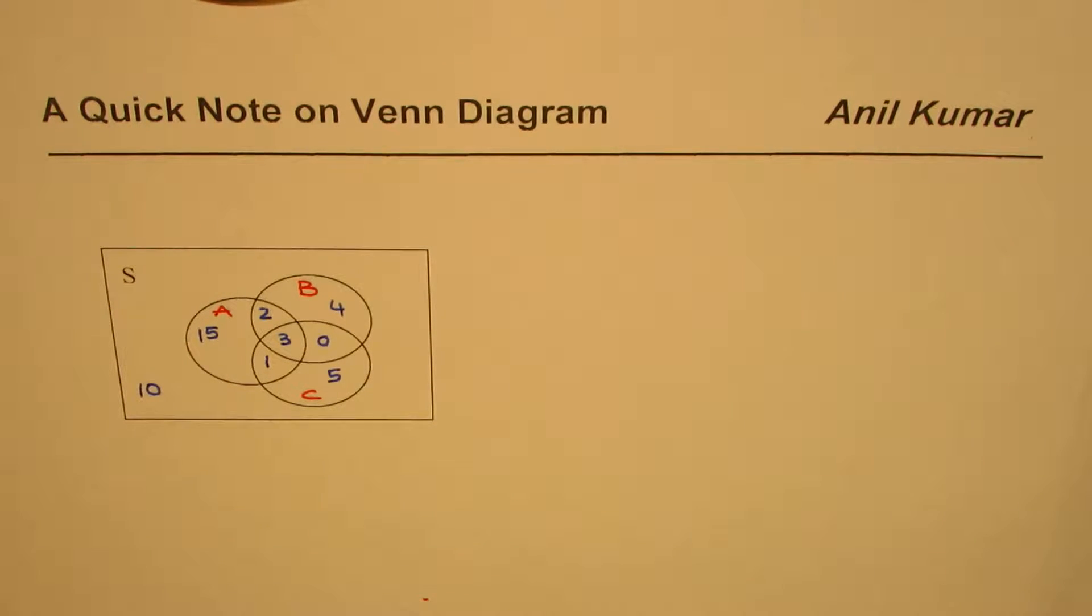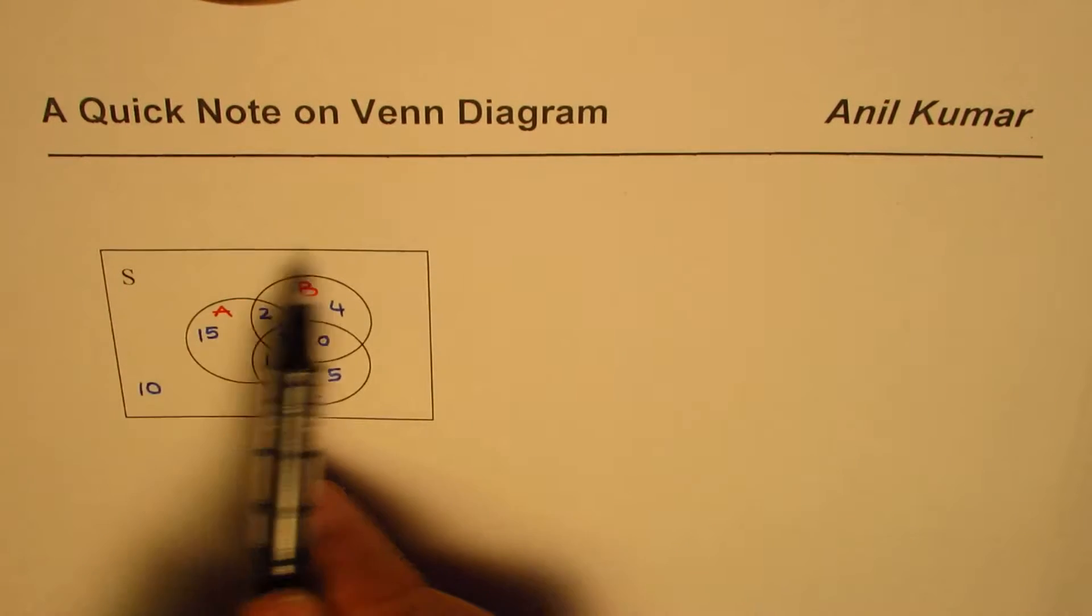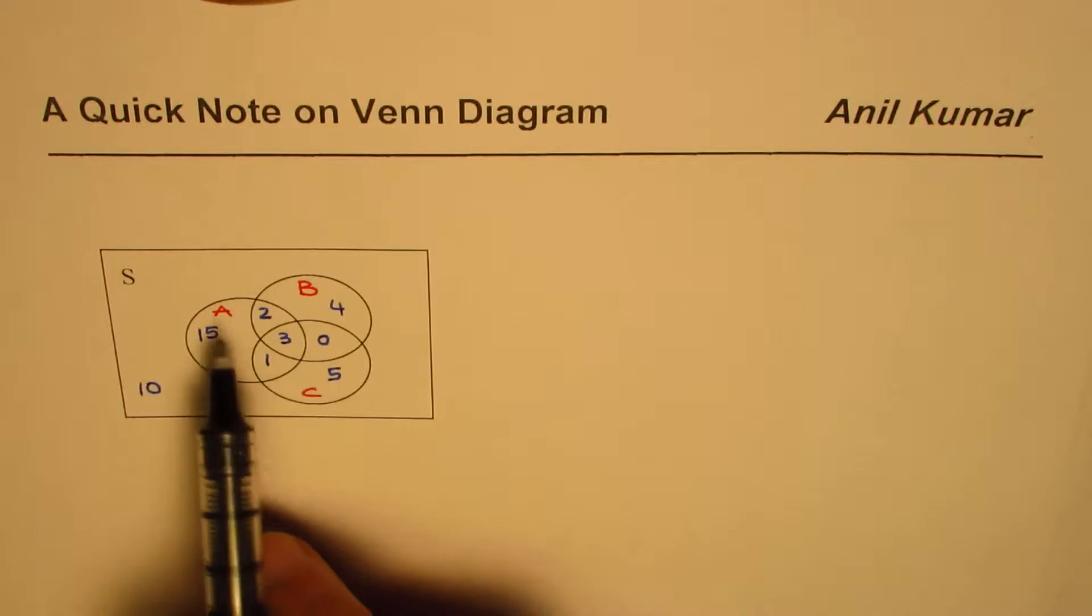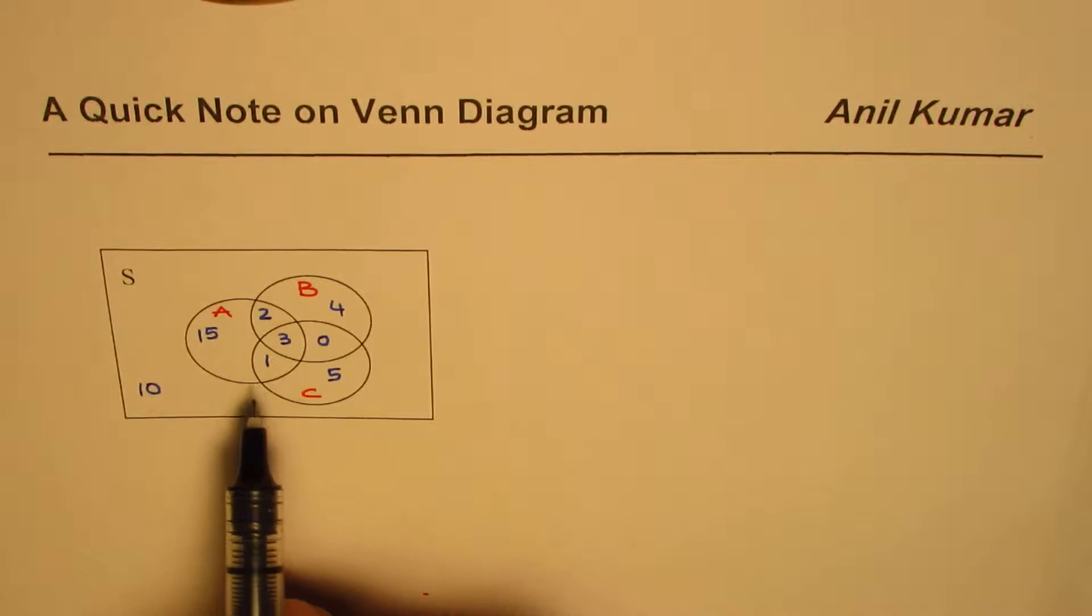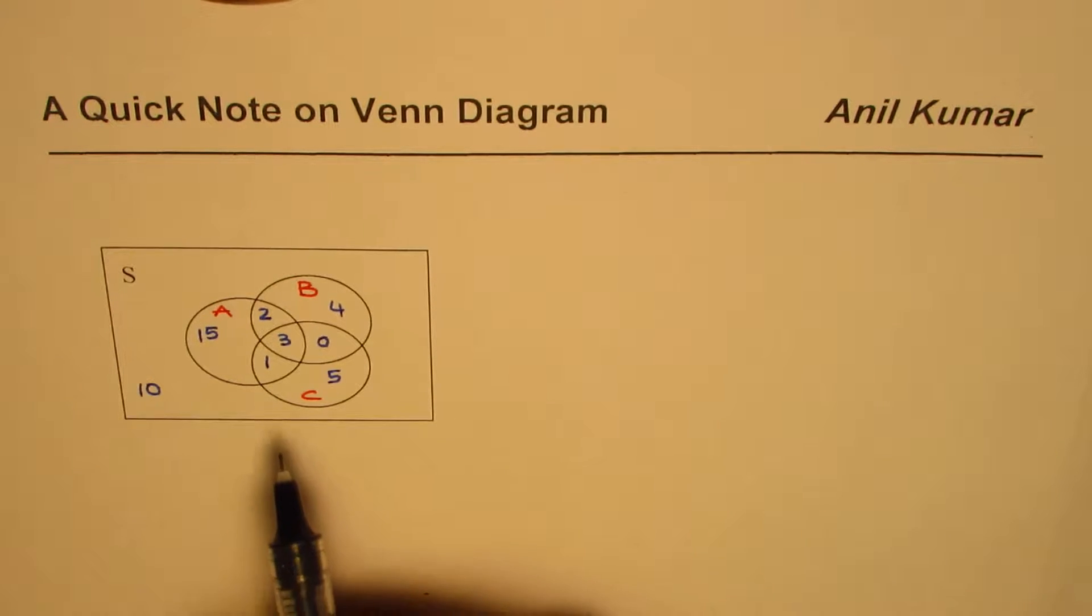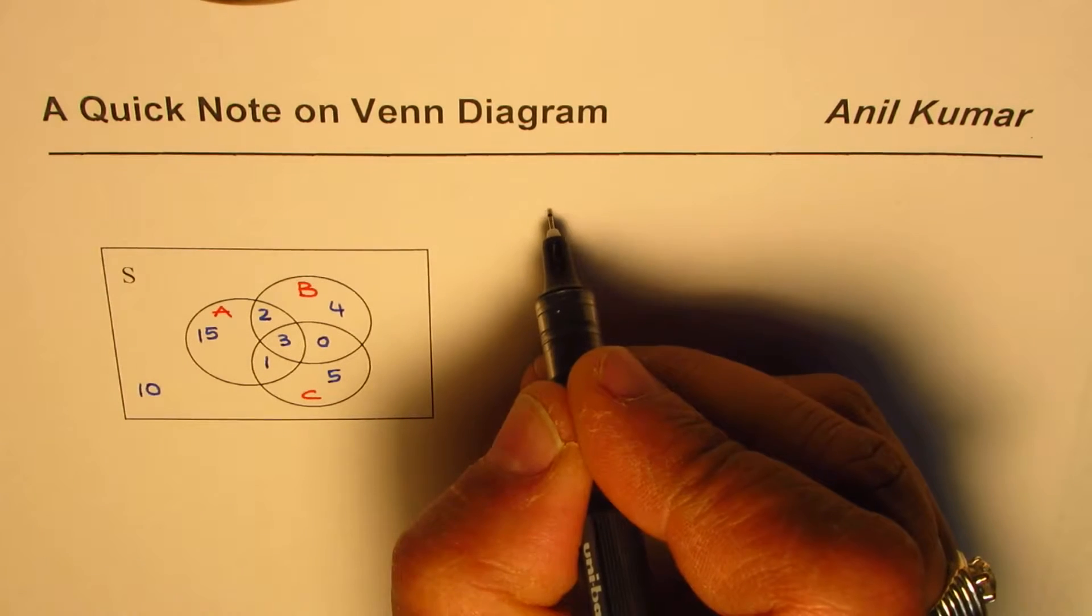I'm Anil Kumar and I've taken up a very good example to understand Venn diagrams. We have in our sample space three sets A, B, and C. The number of elements in each set is written down here, and from this information we need to find answers for a few questions.